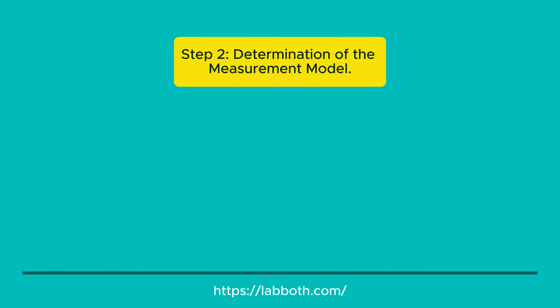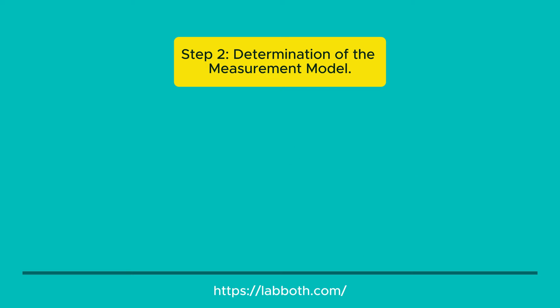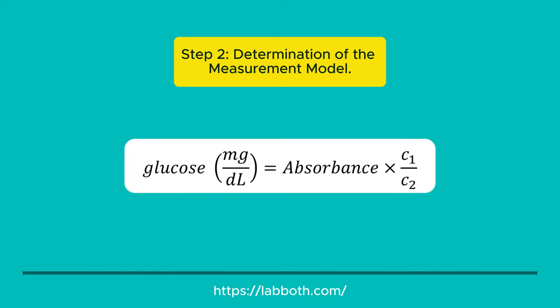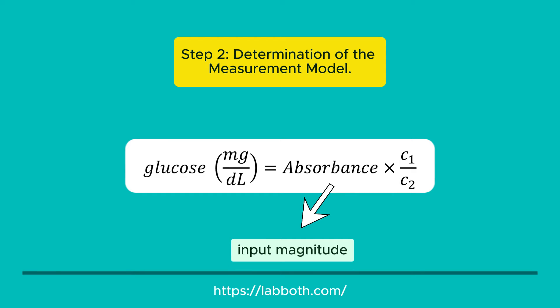Step 2: Determination of the measurement model. Associate your measurement result with a measurement model that takes into account the input variables. This model relates the output magnitude — the result of your assay — with the input magnitudes. An input magnitude, in the case of the glucose test example, could be the measured absorbance. This absorbance is multiplied by other input magnitudes to obtain the output magnitude, or measurement result: glucose concentration expressed in mg/dL.